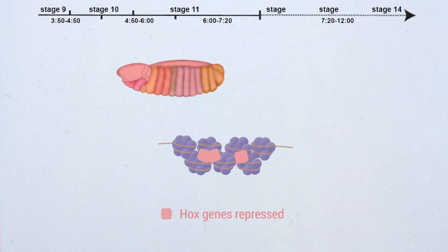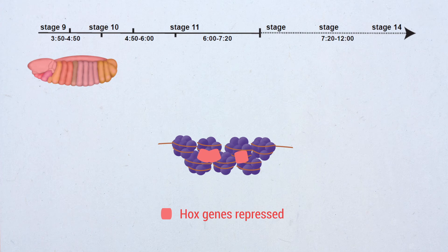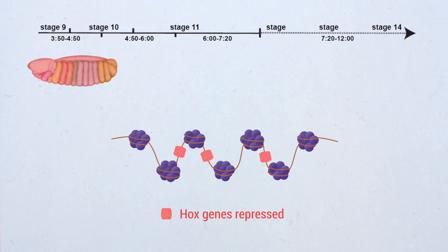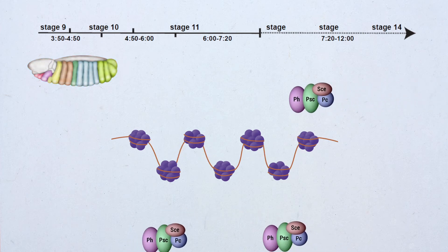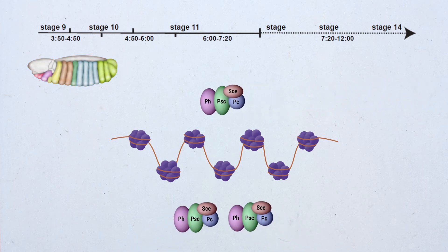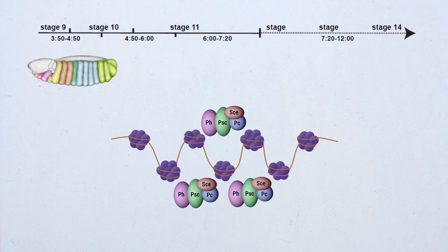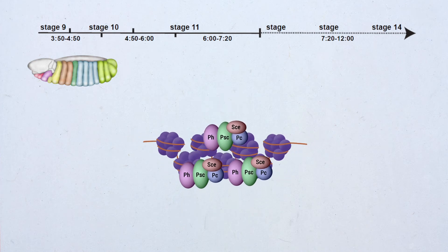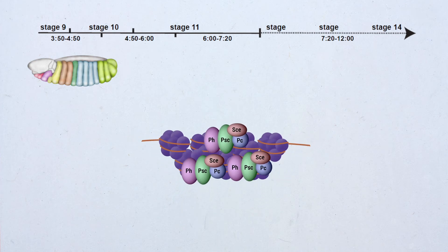We show that the absence of Polyhomeotic or Polycomb affects the higher-order chromatin folding of Hox clusters prior to ectopic Hox gene transcription, demonstrating that PRC1's primary function during early embryogenesis is to compact its target chromatin.